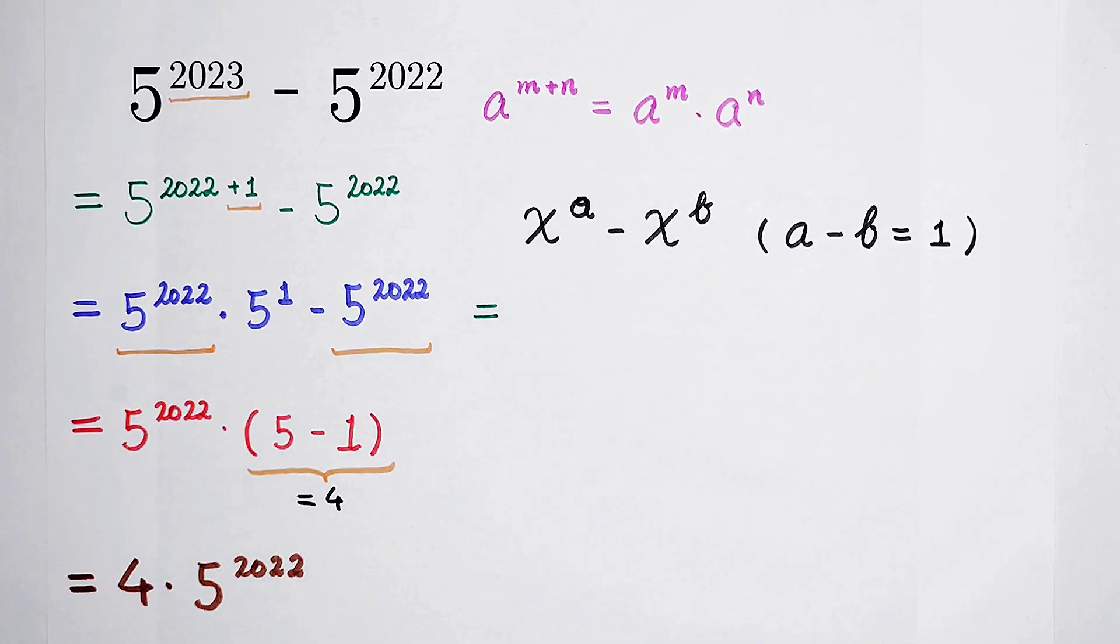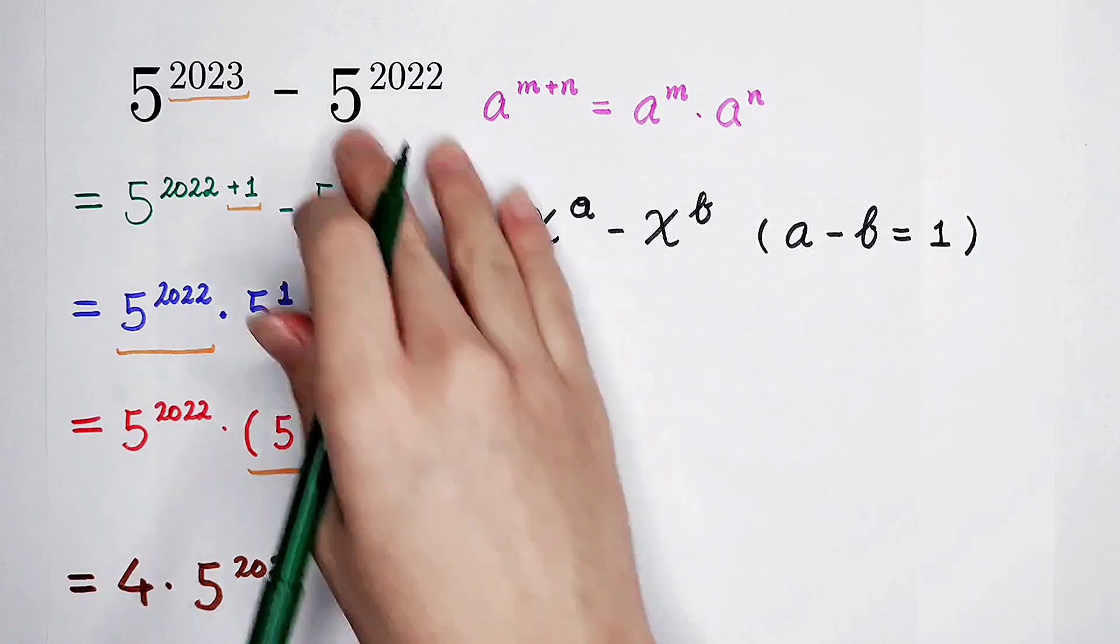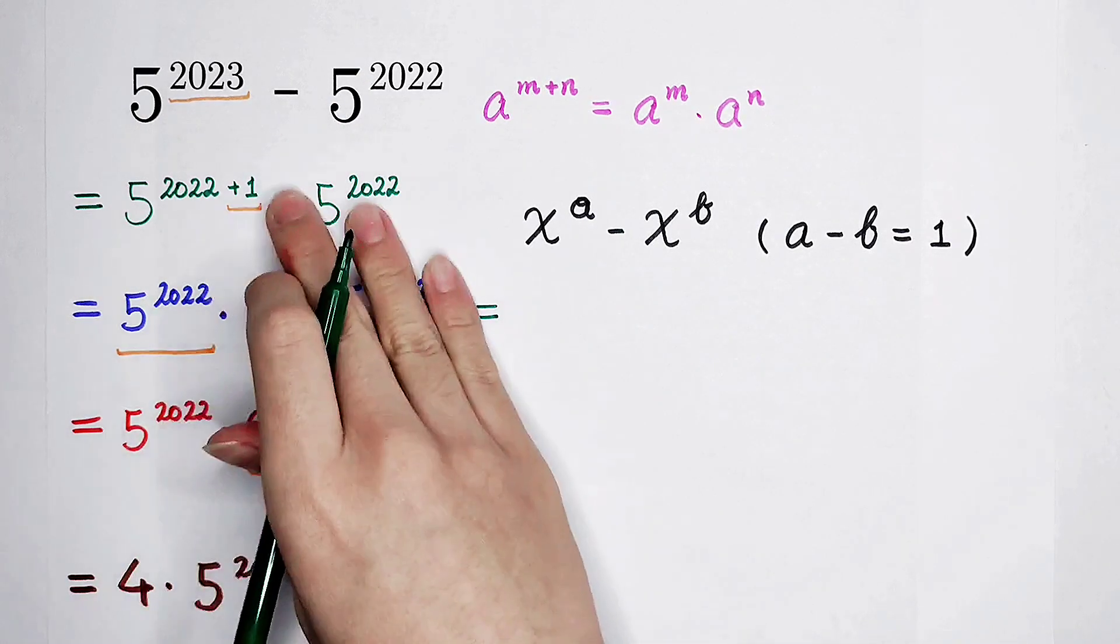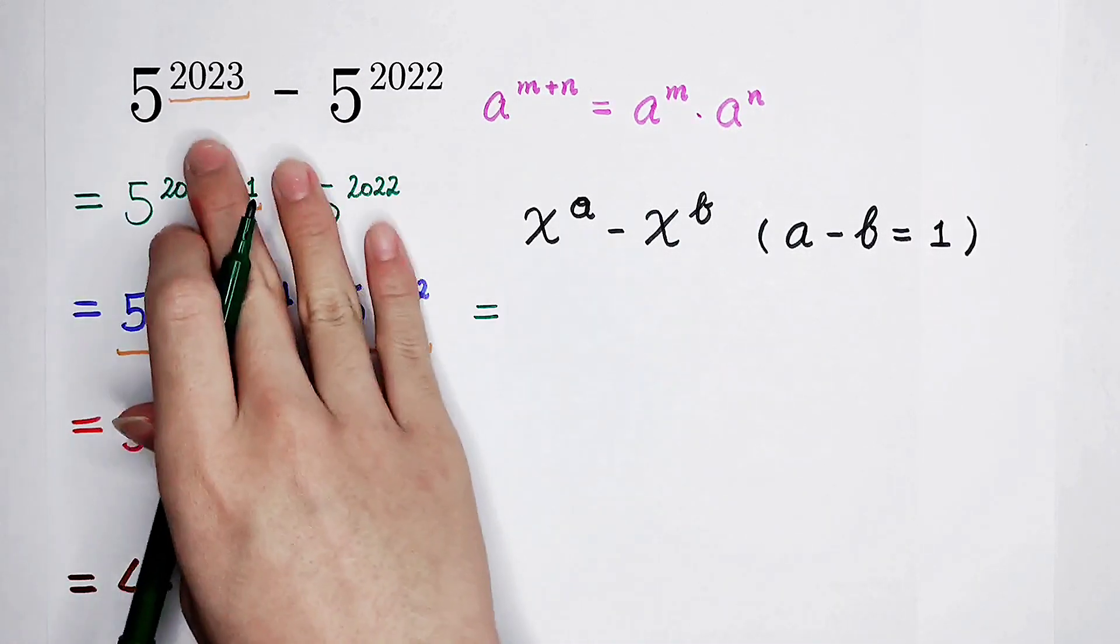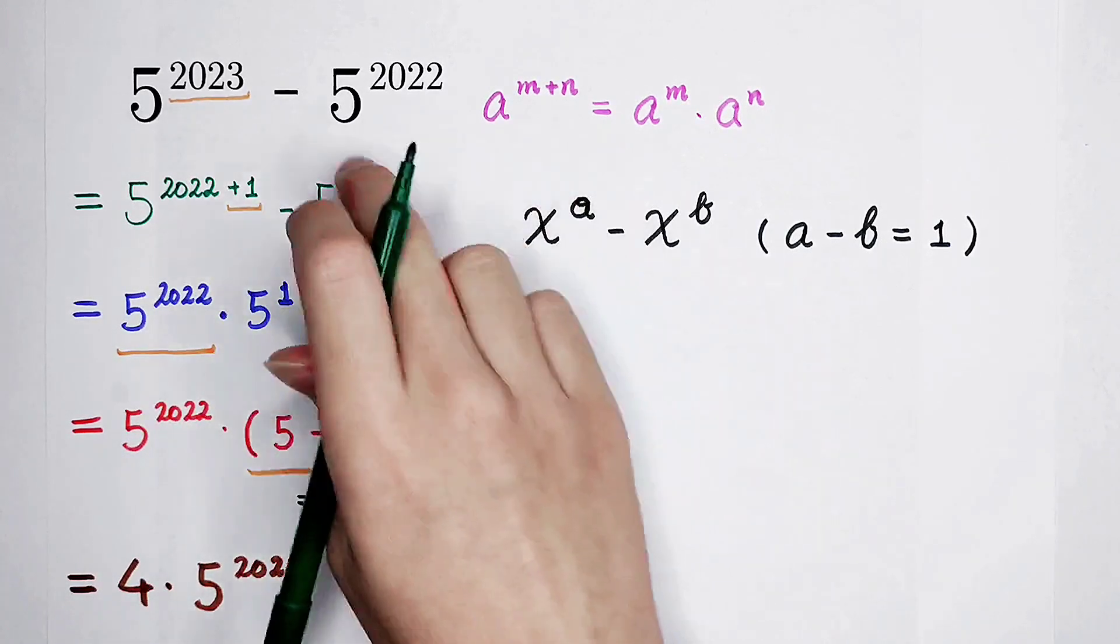For solving this question, we can use the same method. In this question, it's just 5 is x, 2023 is a, and 2022 is b.